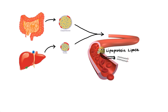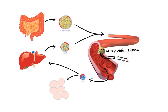As the triglyceride content decreases, VLDL gets transformed into LDL, which now contains a relatively higher percentage of cholesterol. The function of LDL is simply to deliver this cholesterol to cells, where it's used for cell membrane and synthesis of steroid hormones. However, more than half of the circulating LDL is eventually taken up by the liver, which uses cholesterol to synthesize bile acids. Bile acids are necessary for normal digestion and absorption of fats and fat-soluble vitamins in the small intestine.